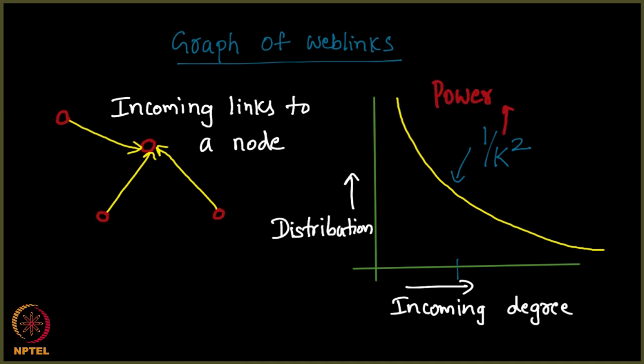And this is called the power law, the law which states that some distributions do not exhibit normal behavior. You do not see a bell curve there. You see a drop like this.